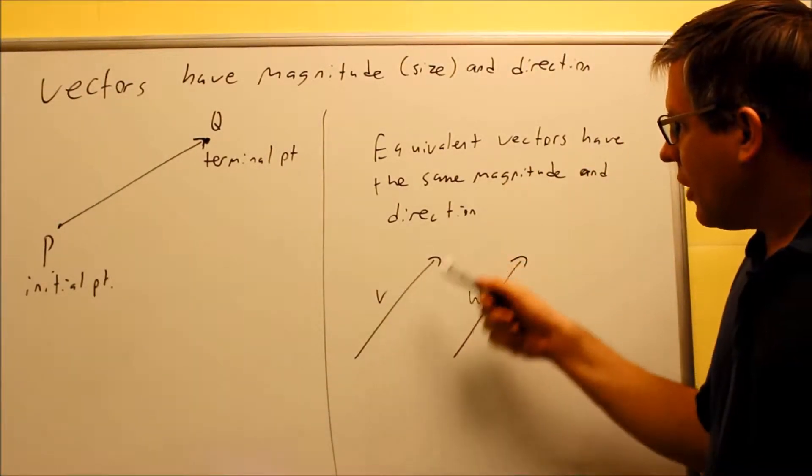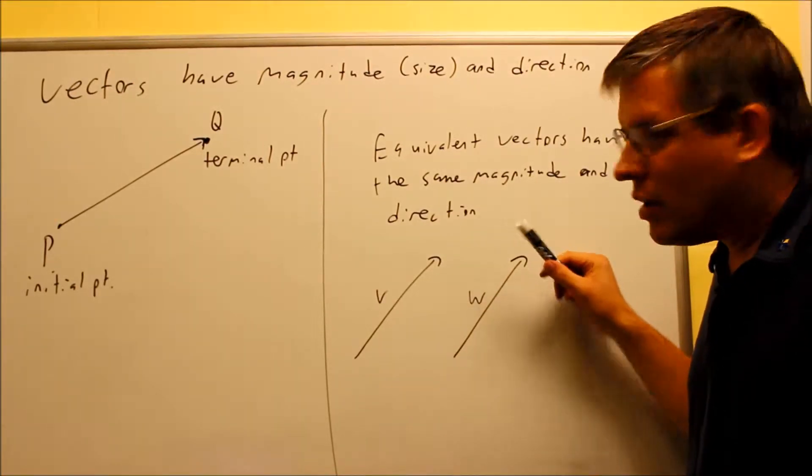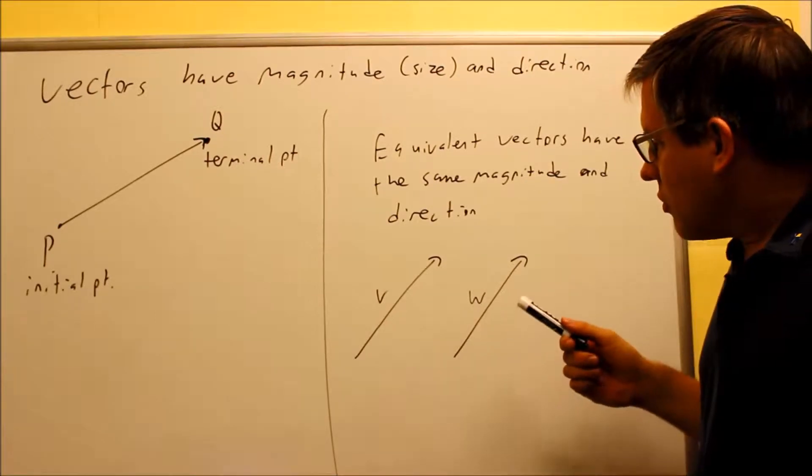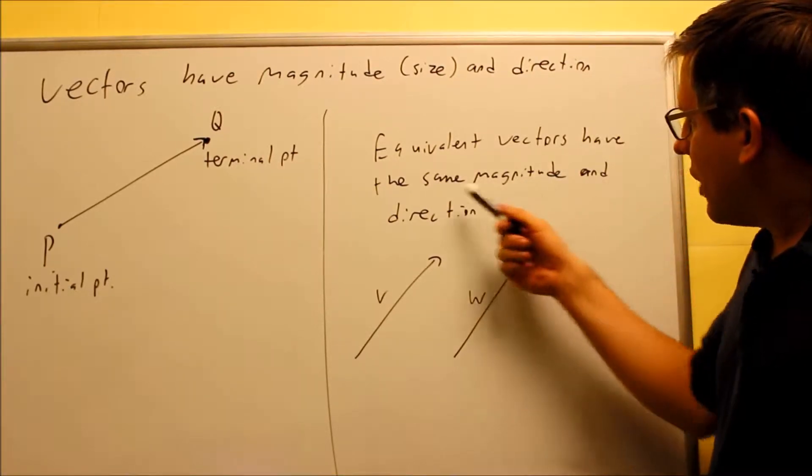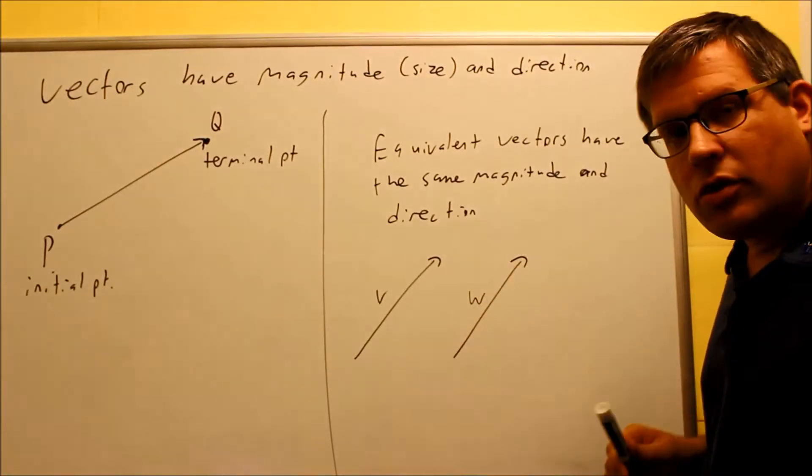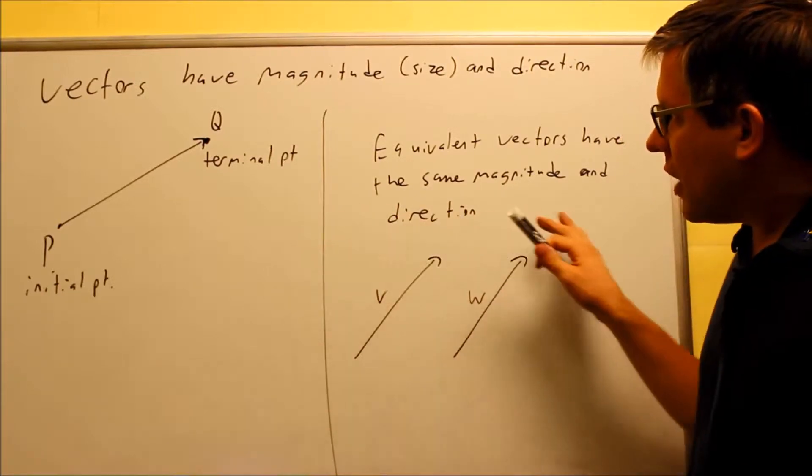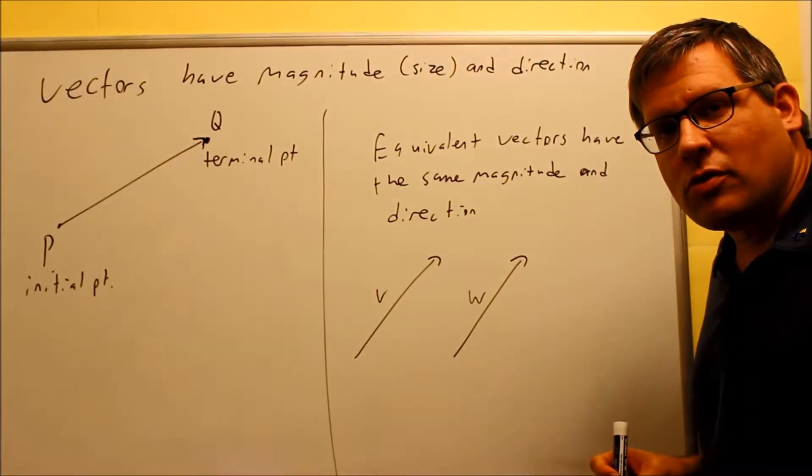Now if you have two vectors that go exactly in the same direction and they're the same length, then these are equivalent or equal vectors. They're only equal, they're equivalent if they have the same size, so same length, and also the same direction. That's the first basics with vectors, now let's take a look at a couple other concepts.